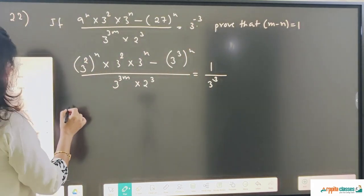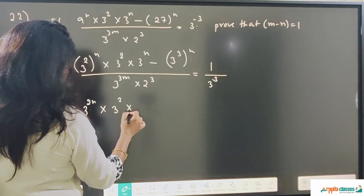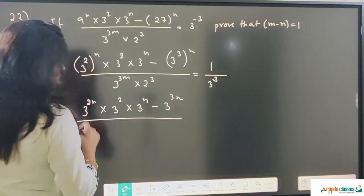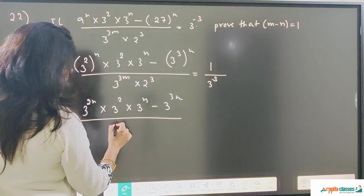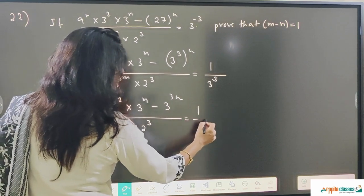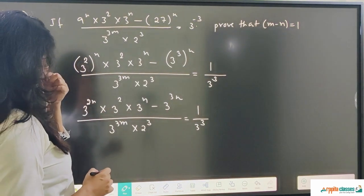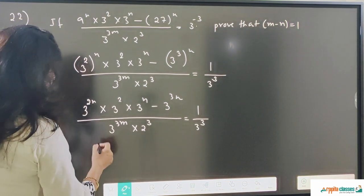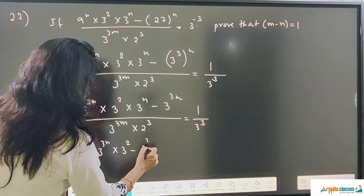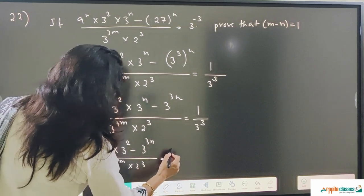So this is 3 to the power 2n into 3 squared into 3 to the power n minus 3 to the power 3n, divided by 3 to the power 3m into 2 cubed, equals 1 upon 3 cubed. Now 2n plus 2 plus n gives us 3n in the numerator. So we can write this as 3 to the power 3n into 3 squared minus 3 to the power 3n, divided by 3 to the power 3m into 2 cubed, equal to 1 upon 3 cubed.